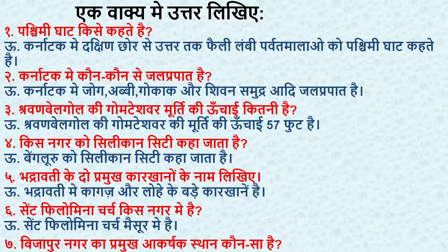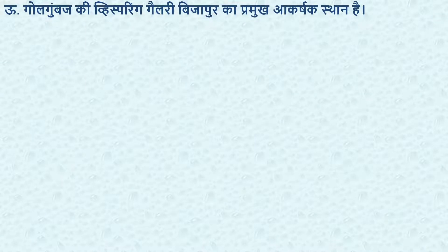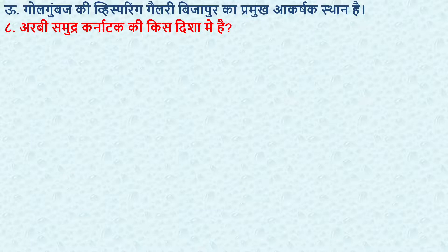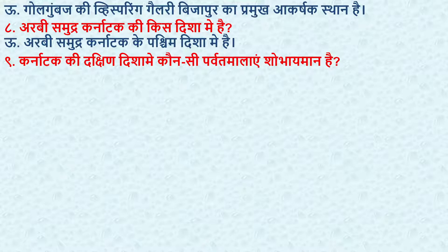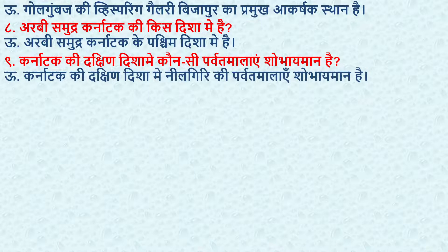Next — Bijapur nagar ka pramukh aakarshak sthaan kaun sa hai? What is the main attraction of Bijapur city? Answer: Golgumbaz ki whispering gallery Bijapur ka pramukh aakarshak sthaan hai. The whispering gallery of Golgumbaz is the main attraction of Bijapur. Next — Arabian Sea is in the west direction of Karnataka. And the Nilgiri mountain ranges are beautiful in the south direction of Karnataka.